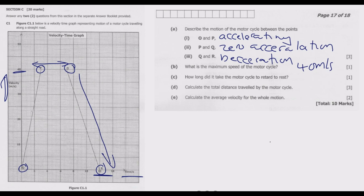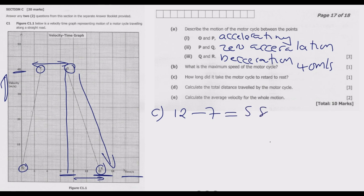Question C: how long did it take the motorcycle to retard to rest? Retardation started at the midpoint between 6 and 8 seconds, which is 7 seconds, all the way up to 12 seconds. So it's 12 minus 7, which equals 5 seconds.